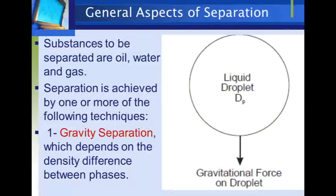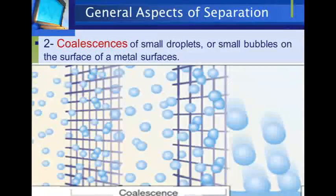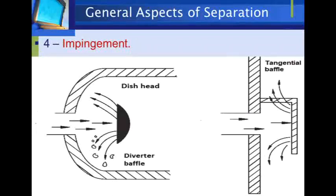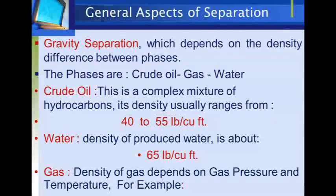Separation, whether two or three-phase, is achieved by one or more of the following techniques: gravity separation, which depends on the density difference between phases; coalescence, which depends on the growth of droplets caused by the collision of small droplets at the surface of a metal or in an electrical field; centrifugal force, which accelerates gravity separation; and impingement, which depends on separation caused by collision of phases with a blade or deflector.